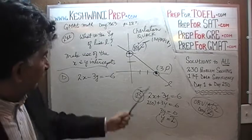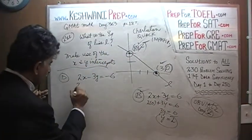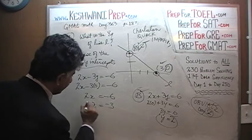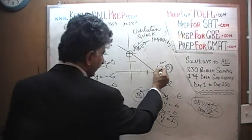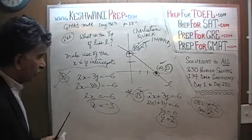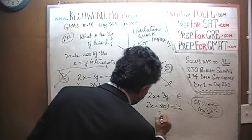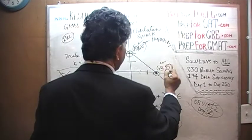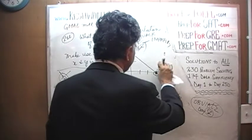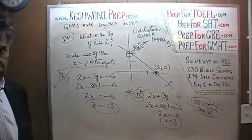Let's replace y with 0. When we replace y with 0, x has to work out to be 3. For D: 2 times x minus 3 times 0 equals negative 6. That means 2x equals negative 6, which means x equals negative 3. But x is supposed to be positive 3 — D is not the answer. The answer is B. For B: 2 times x plus 3 times 0 equals 6, which means 2x equals 6, x equals 3. Exactly the way it's supposed to be. The answer is B, not D.